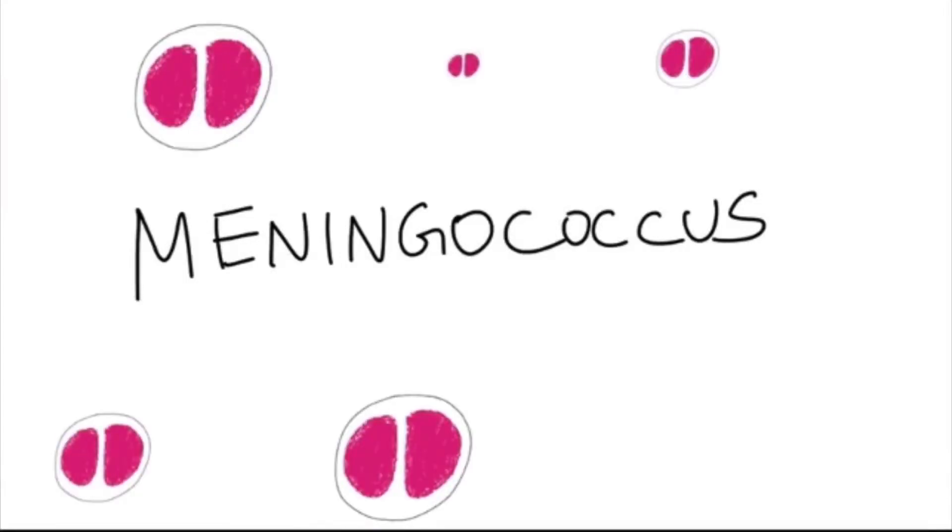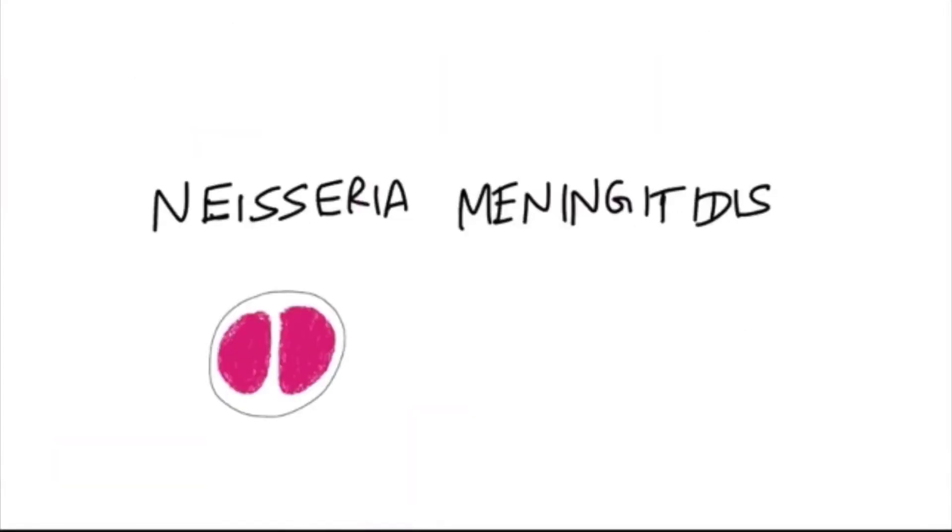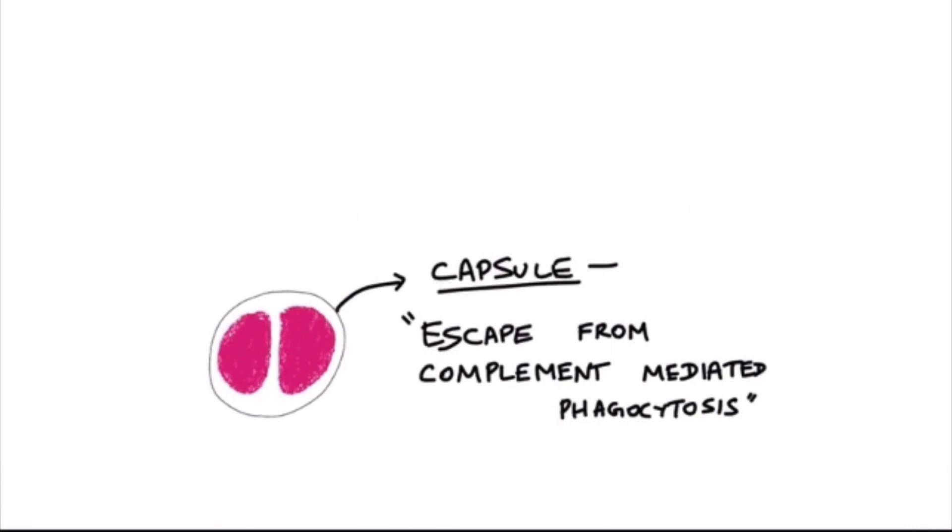This video is about Meningococcus, which is also called Neisseria meningitidis. As the name suggests, it causes meningitis, commonly in children. Neisseria meningitidis has a capsule around it which helps it escape from complement-mediated phagocytosis. This capsule is a virulence factor.